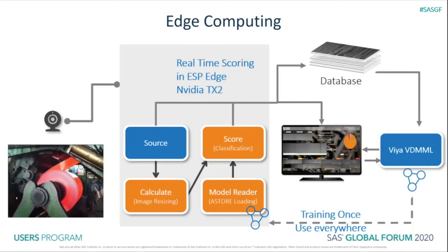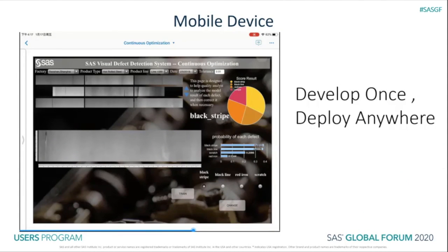We can also package our ESP project from the server into an XML file and deploy it on an edge device. The customer can then monitor their production line in real time with edge devices like NVIDIA TX2 or others. We can not only support deployment on the cloud, but also easily deploy on edge devices without extra development work. We can also embed our continuous optimization into SAS Viya VA and support quality analysts to modify labels and retrain the model through a mobile device. This demonstrates our AIoT capability of develop once, deploy anywhere.